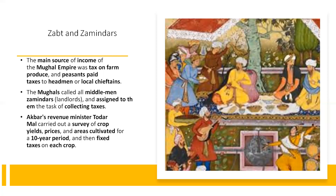Today, we are going to understand the administrative system and structure of the Mughal dynasty — that is, the system of Zabt and Zamindars.